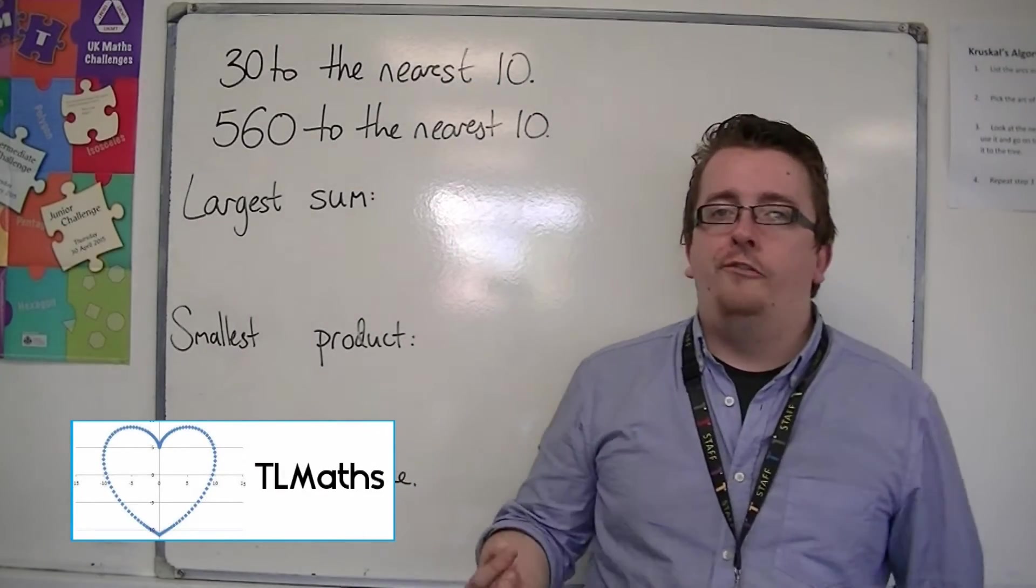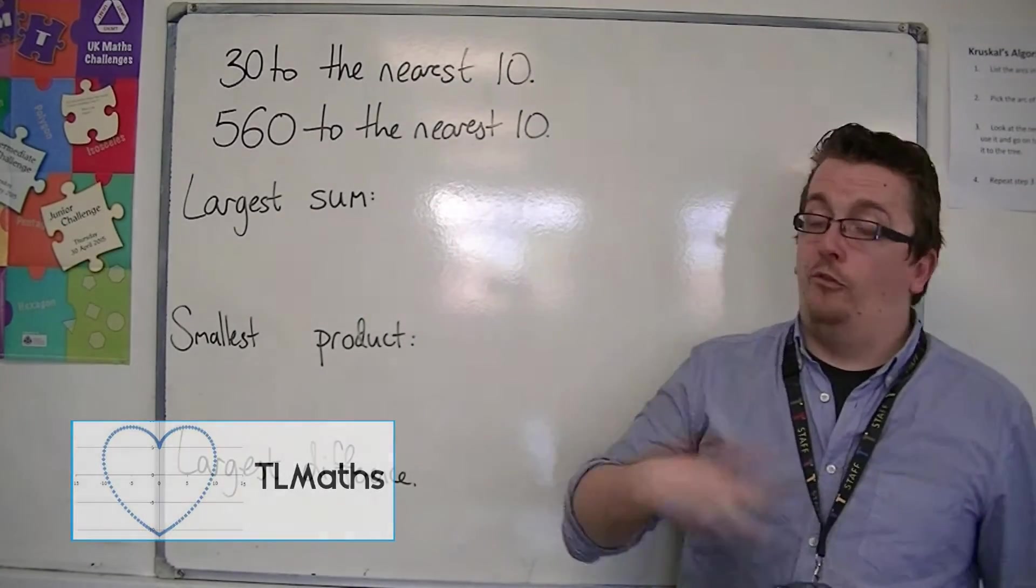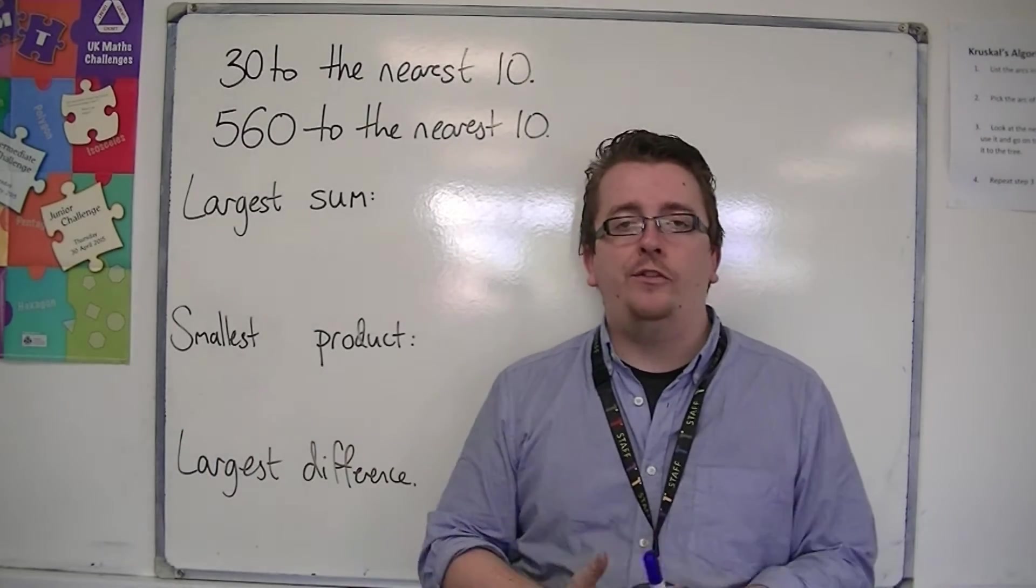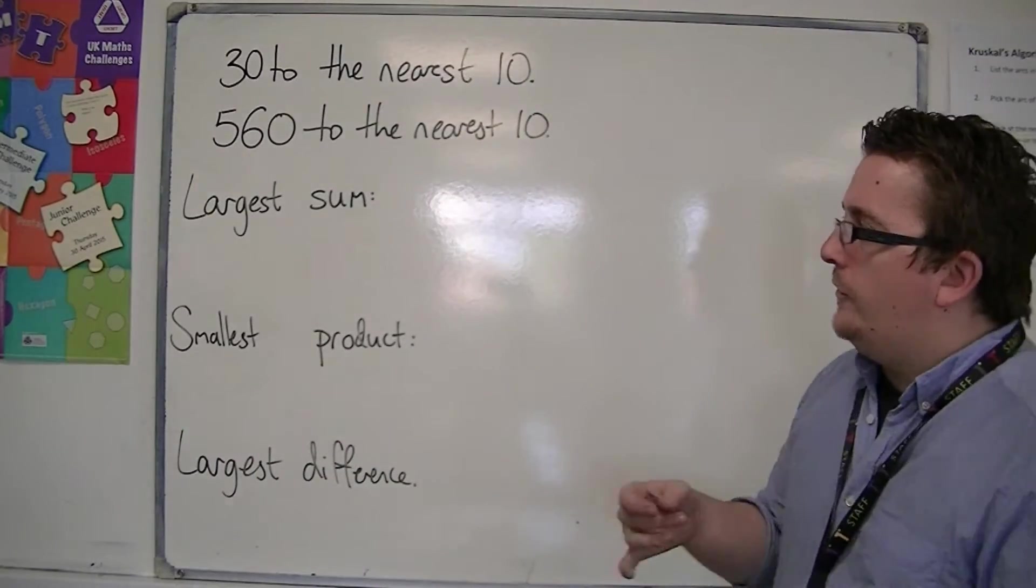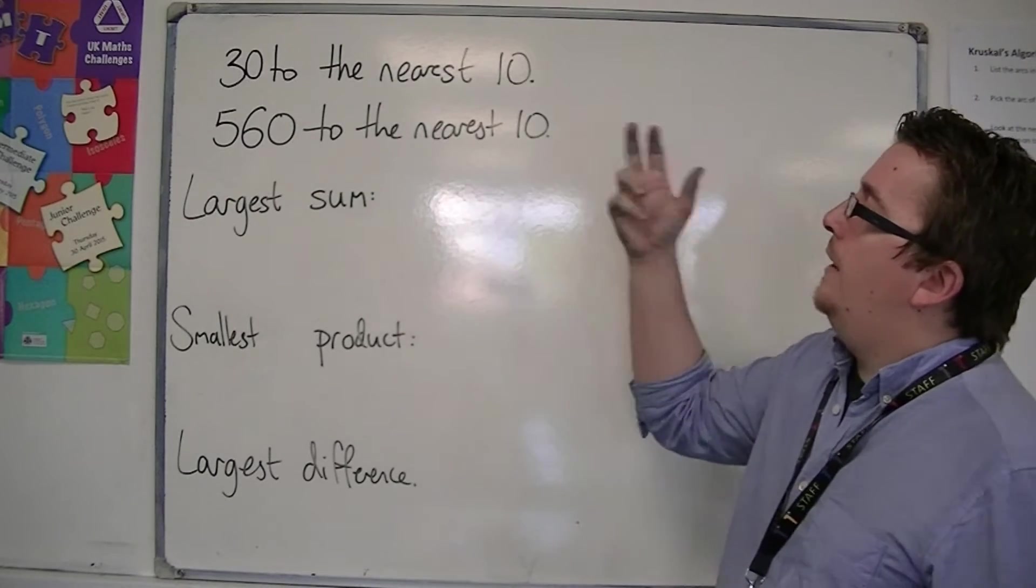So continuing this idea of rounding and looking at the smallest and largest possible values that you can get, depending on what you want to look for, let's say we've got 30 and 560.